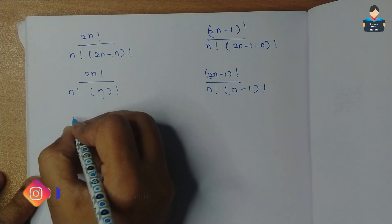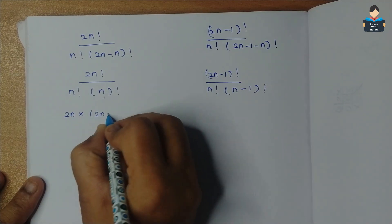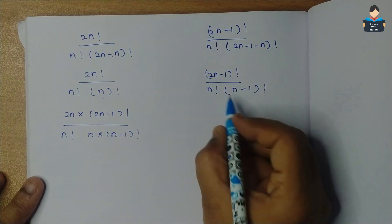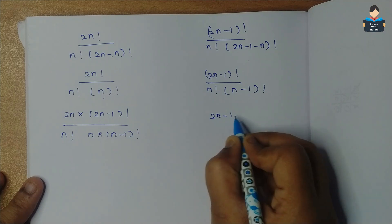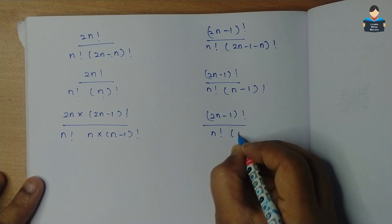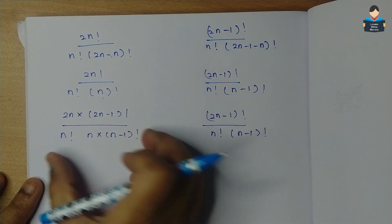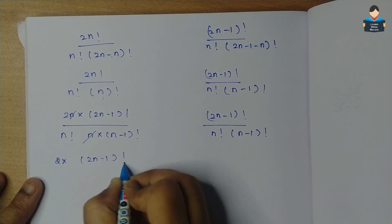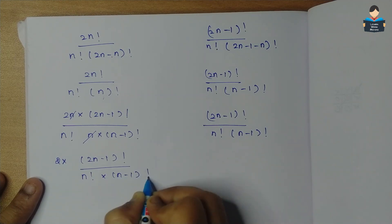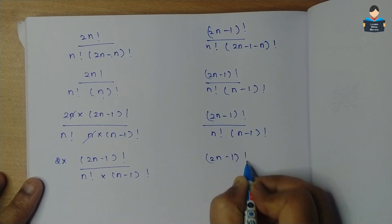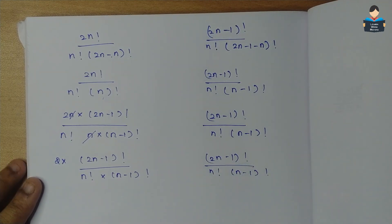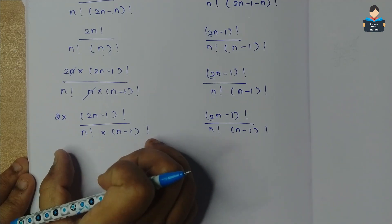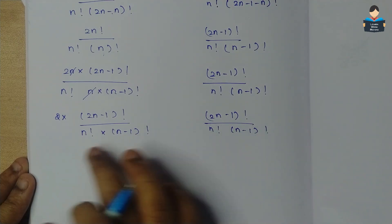Now expanding 2nCn, we write 2n! = 2n * (2n-1)! in the numerator, and n! = n * (n-1)! in the denominator. So 2nCn = 2n * (2n-1)! / (n * (n-1)! * n!). This simplifies to 2 * (2n-1)! / (n! * (n-1)!). Comparing, this is exactly 2 times (2n-1)Cn. The n cancels and we get 2 as an extra factor, so this coefficient is 2 times the other coefficient.